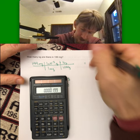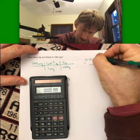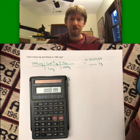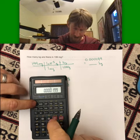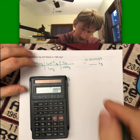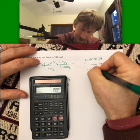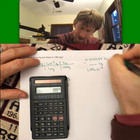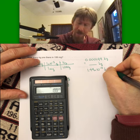The answer is 0.000199, which is a fine answer. If you would rather put it in scientific notation, you get 1.99 times 10 to the minus 4 kilograms. Those are both equivalent ways of saying the same number.